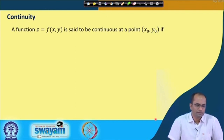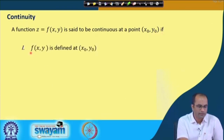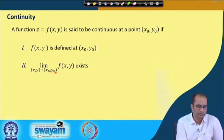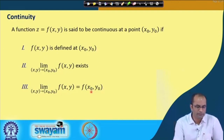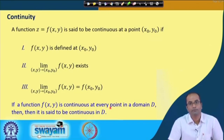We have already seen the definition of limit — indeed the delta-epsilon definition of limit — and this is motivated by that definition. A function f is said to be continuous at a point (x₀, y₀) if: first, f is defined at that point; second, the limit exists; and third, the limit is equal to the function value at that point. If all three conditions are met, then we call the function continuous at that point, and if a function is continuous at every point in the domain, we call that function continuous in that domain.